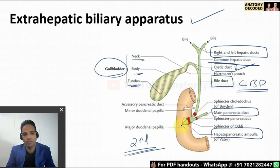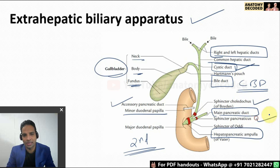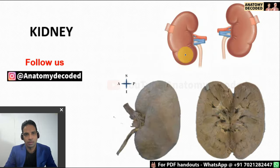The hepatopancreatic ampulla opens into the second part of the duodenum, which also marks the junction of the foregut and midgut. The accessory pancreatic duct opens into the minor duodenal papilla. These ducts are surrounded by sphincters: sphincter choledochus surrounds the bile duct, sphincter pancreaticus surrounds the main pancreatic duct, and the hepatopancreatic ampulla is surrounded by the sphincter of Oddi.